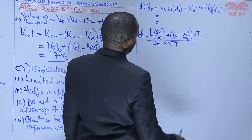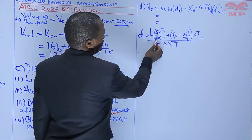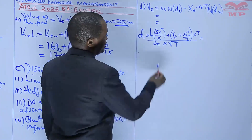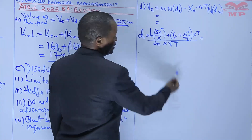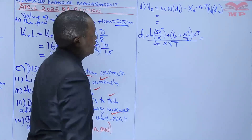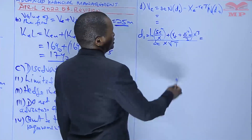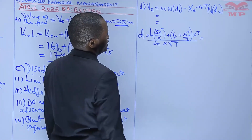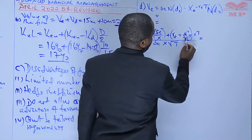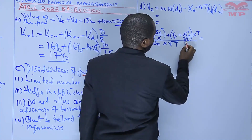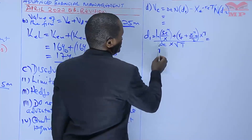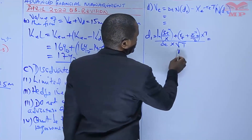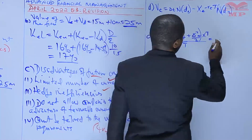So, candidates: ST is the underlying asset price. X is the exercise price, or the strike price. RF is the risk-free rate. This is the variance. T is the time. This is the standard deviation, and that is the square root of time. So, let's substitute the values.